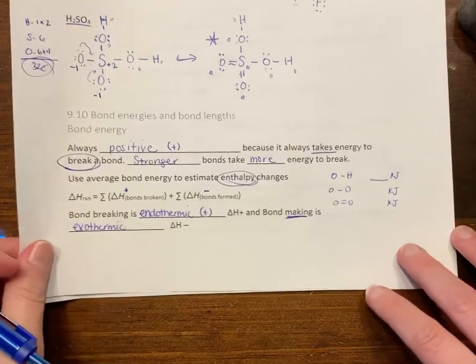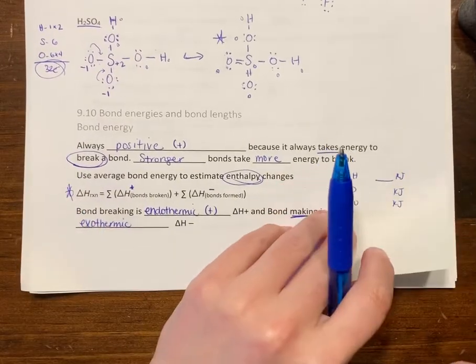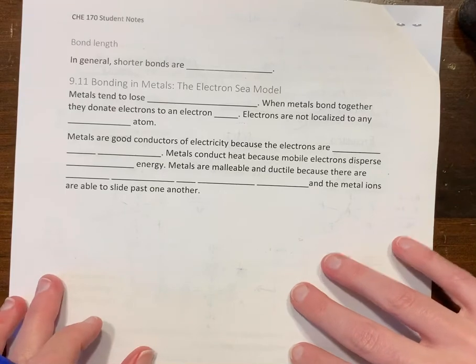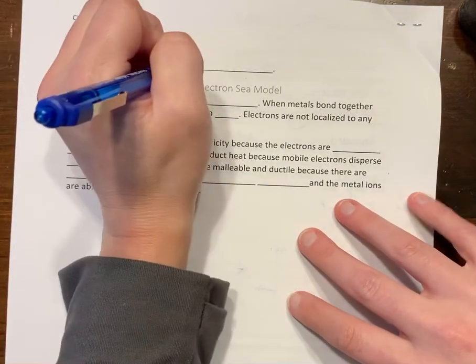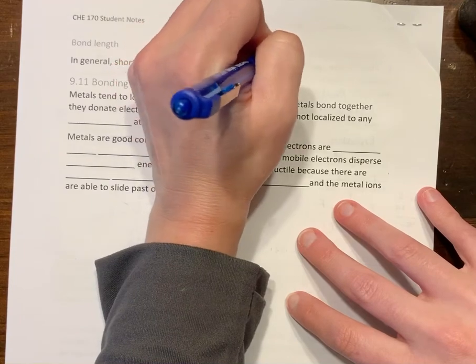This is also something you'll be doing in organic chemistry, something similar in Chem 180 as well. Bond length: remember, shorter bonds are stronger. That would be our double and triple bonds.